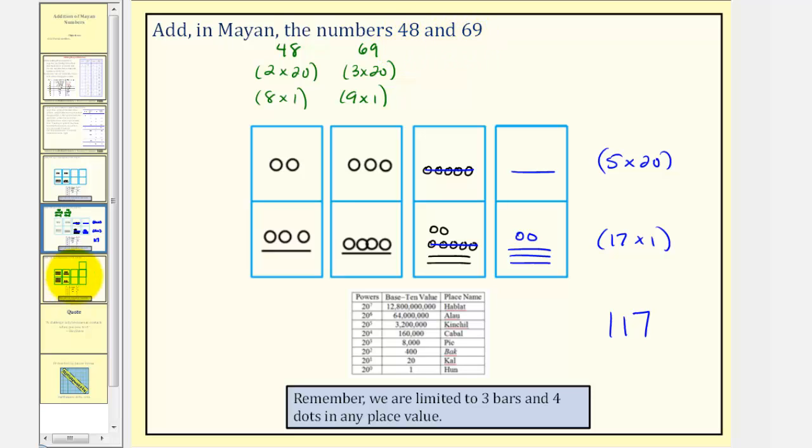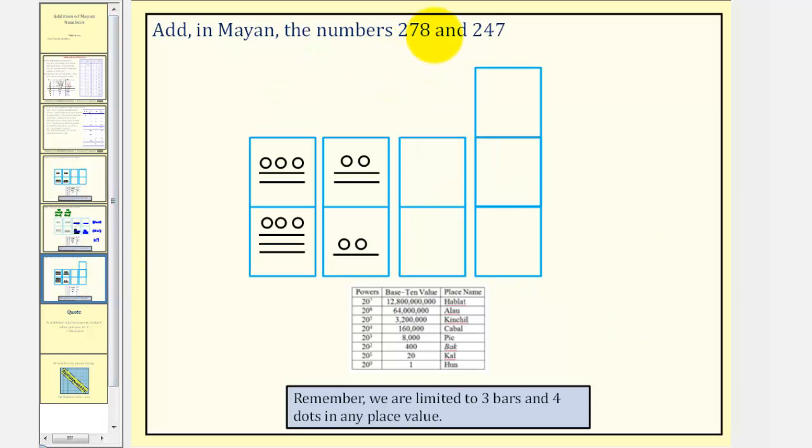Let's take a look at a second example. Here we want to find the sum of 278 and 247. So this first number is 278. Notice how we have 13 20s, that's 260, and then we have 18 ones giving us 278. This is 247 because we have 12 20s and seven ones.